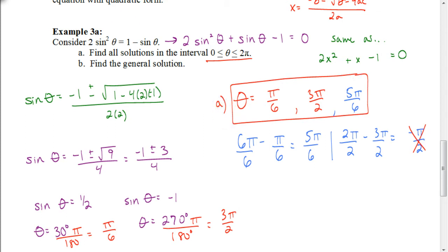Now, in part B, it says we're applying the general solutions. The general solutions are going to be we set each of those solutions equal or we add to each of those solutions 2 pi n.